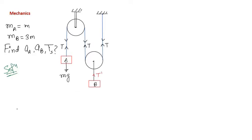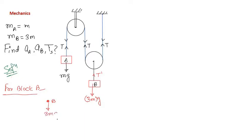The tension in the rope hanging block B is different because it is a separate rope — let us call it T'. The gravitational force on block B is 3mg downward, with tension T' acting upward. The overall motion of block B is in the downward direction.